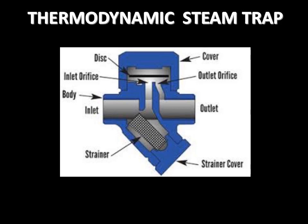Now, a thermodynamic steam trap. Initially, this is the inlet and this is a strainer. Through this inlet orifice, it moves to the disk. This is the outlet orifice and this is the outlet port. So the steam condensate enters from this port, travels through this orifice, and exits through this port.